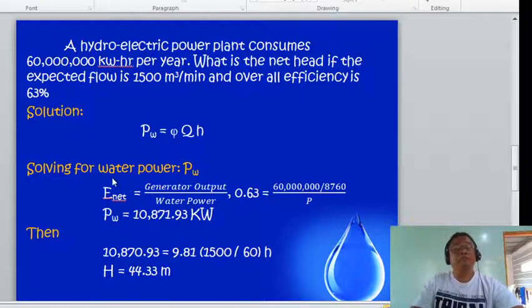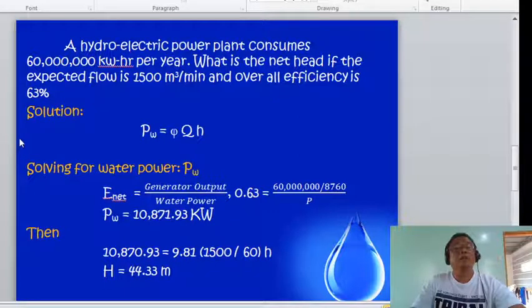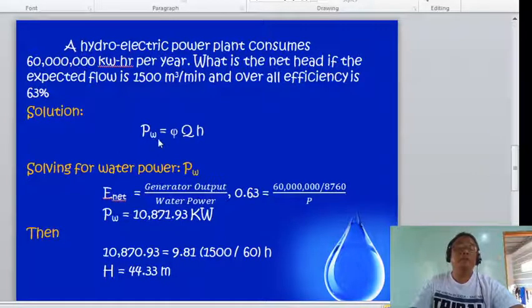Getting the head: efficiency of 0.63 equals generator output divided by water power. So 0.63 equals 60 million divided by 8760, which is the number of hours per year, divided by the water power. Water power now is 10,871.93 kilowatts.